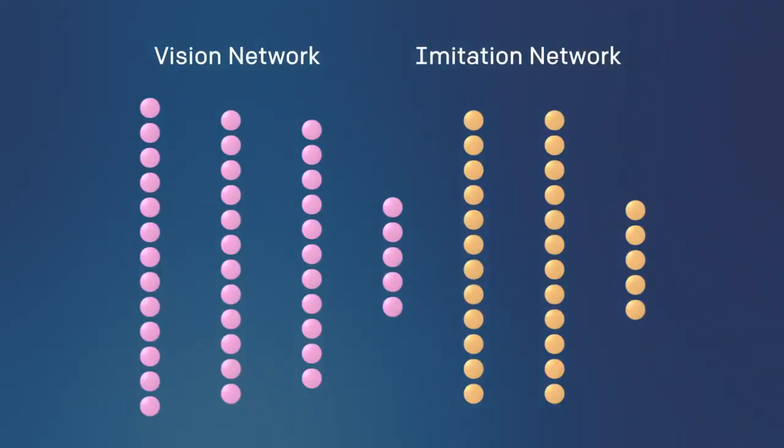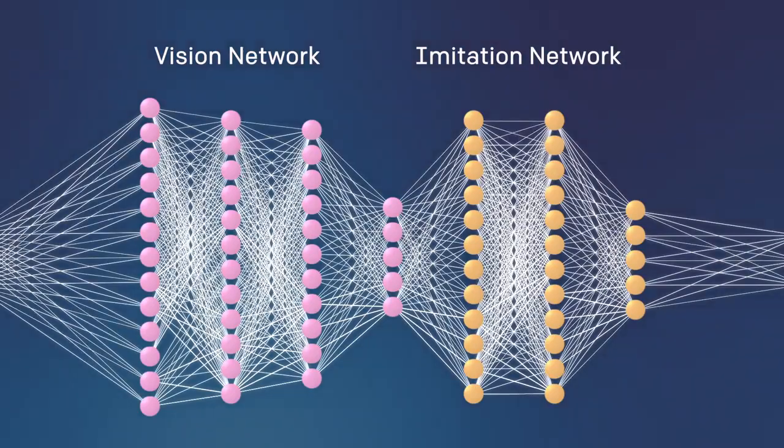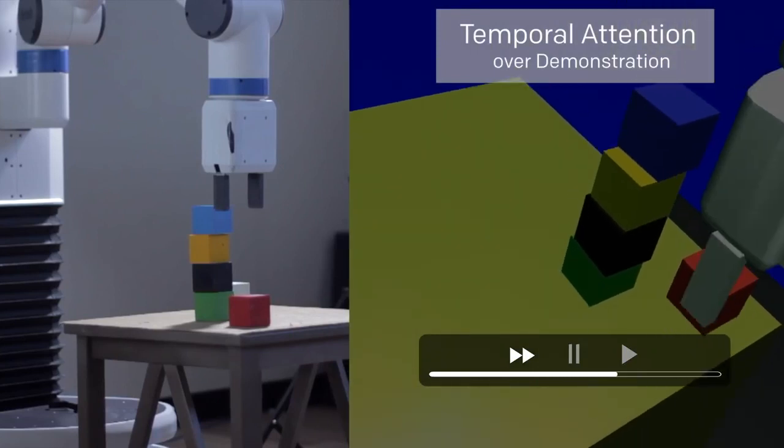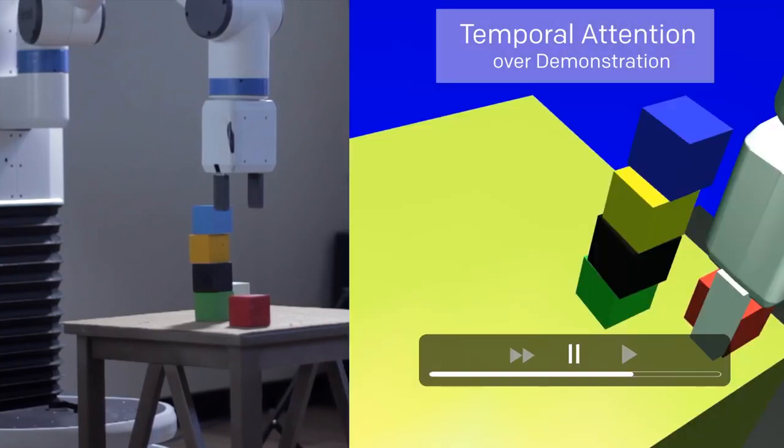Now that we know the location of the blocks, the imitation network takes over. Its goal is to mimic the tasks shown by the demonstrator. This neural net is trained to predict what action the demonstrator would have taken in the same situation. On its own, it has learned to scan through the demonstration and pay attention to the relevant frames that tell it what to do next.